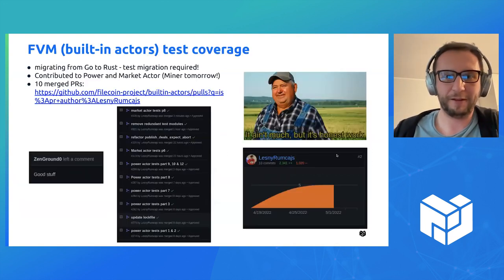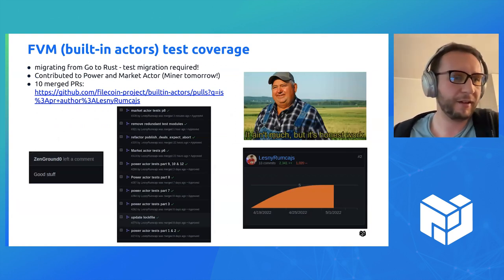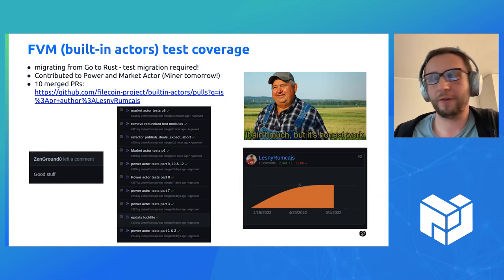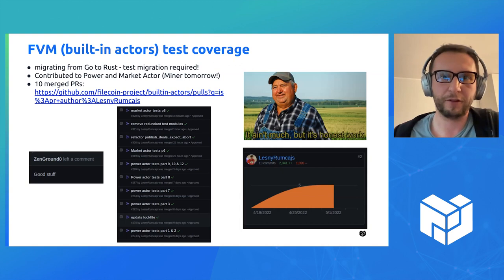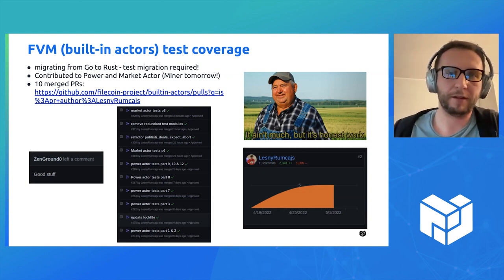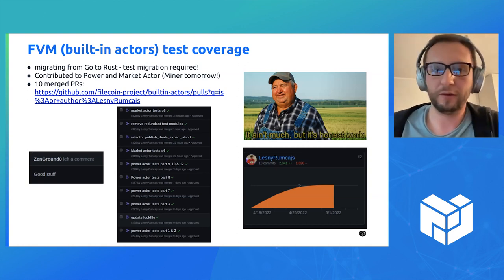So it's kind of a long-term investment. It's called FVM or the built-in actors repository. Built-in actors are basically on-chain actors that are going to power the Filecoin network from network version 16, so pretty soon. They are written in Rust and are supposed to work inside FVM. They are bundled together as WASM bytecode, bundled to the clients.